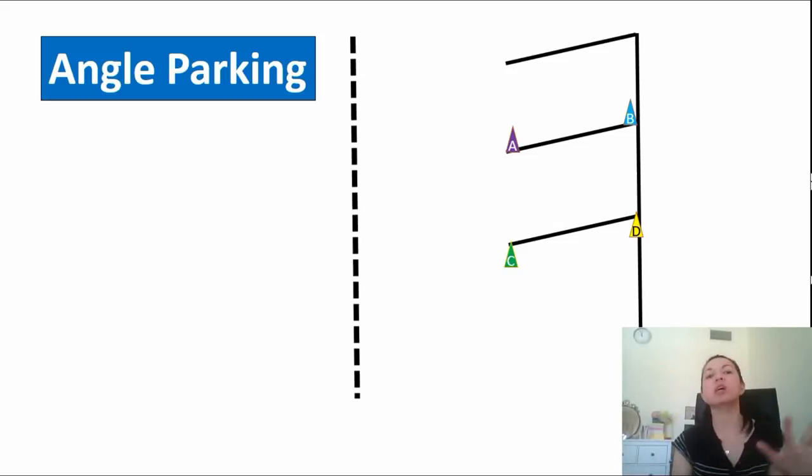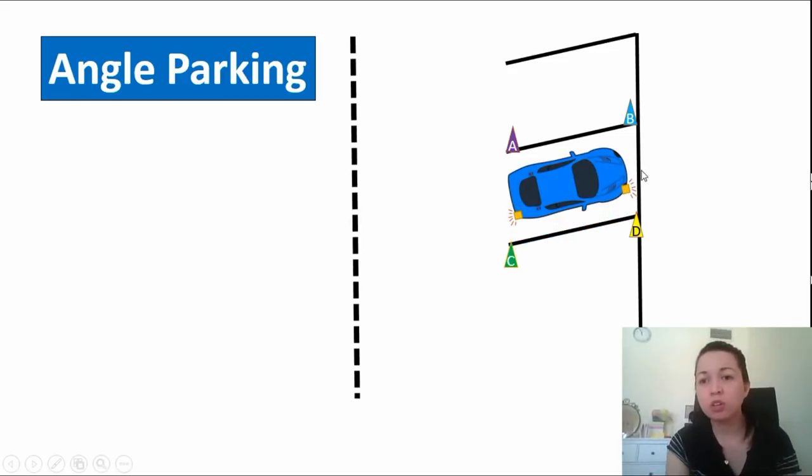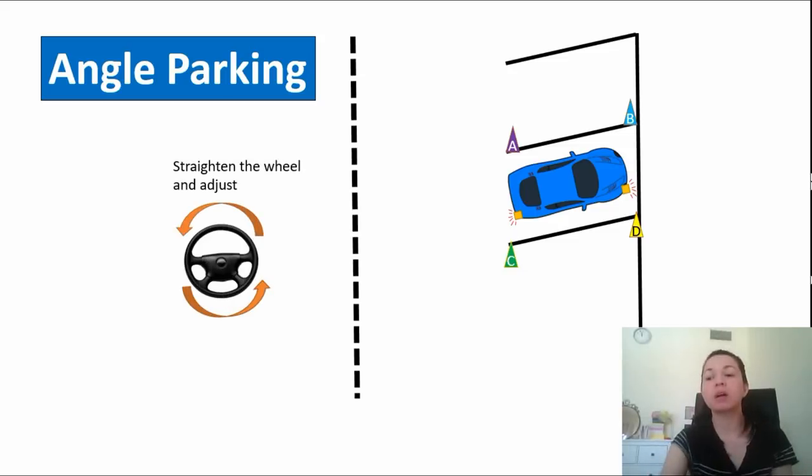Then just slowly drive straight. Make sure you don't touch any pole. There's going to be another pole in front here. Once you feel that you are already inside the parking space enough with the adjustment, do a full stop.